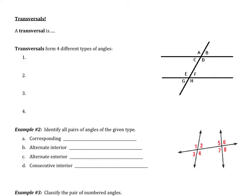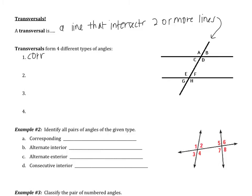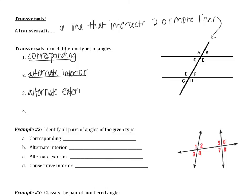Now we're going to get into what is really the most important part of this section. This section is all about identifying different angle types — the first page was all background for this second page. We're going to learn a few more definitions, starting with transversal. A transversal is a line that intersects two or more lines. Transversals form four different types of angles: corresponding angles, alternate interior, alternate exterior, and consecutive interior.